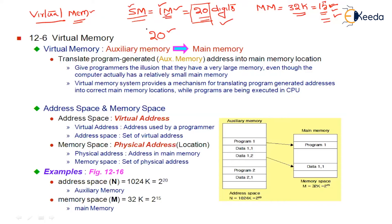So the programmer started constructing a 20-bit address rather than a 15-bit address. But what is the actual reality? Do we have 1M main memory? No — 1M main memory is not available. The actual main memory is equal to 32K. The reality is just 32K; the illusion is 1M. So he believed his main memory is equal to 1M and started constructing with 20 bits.